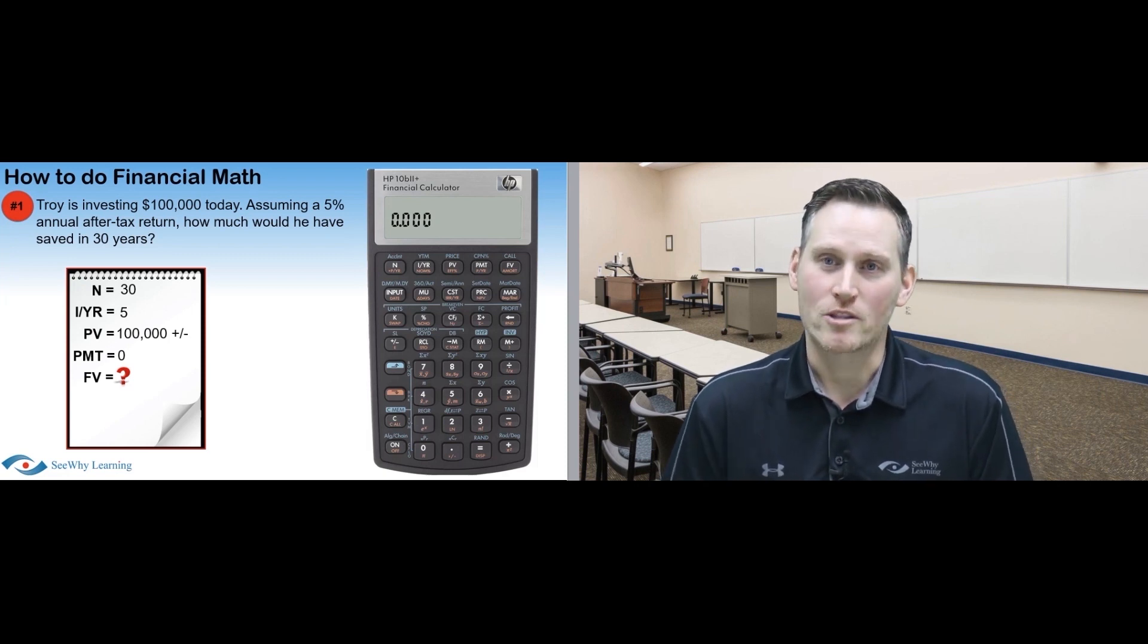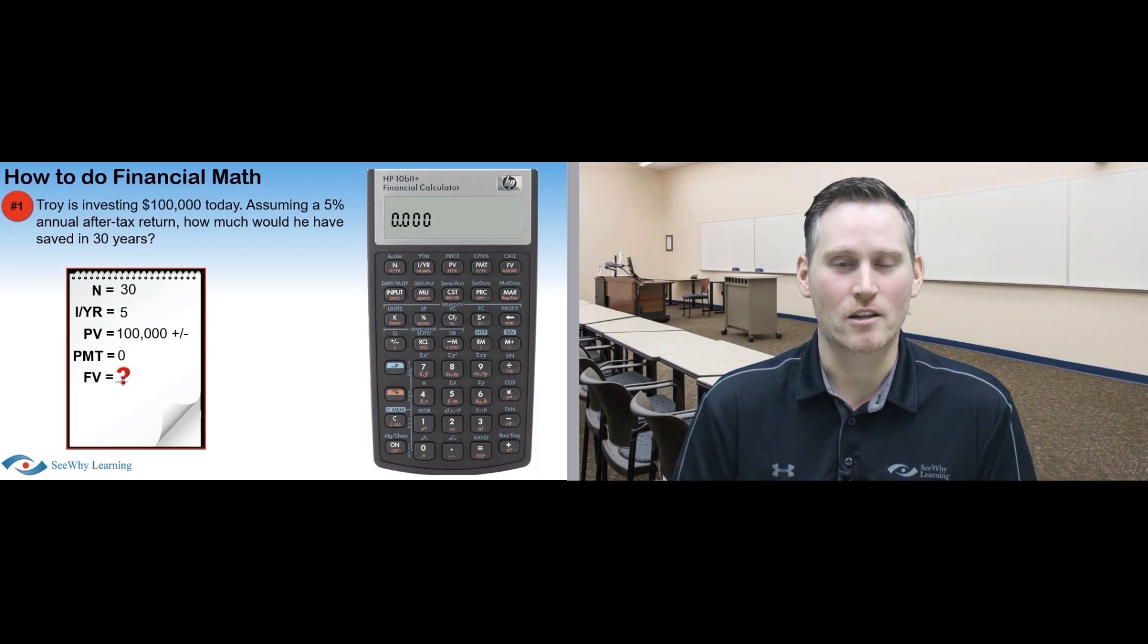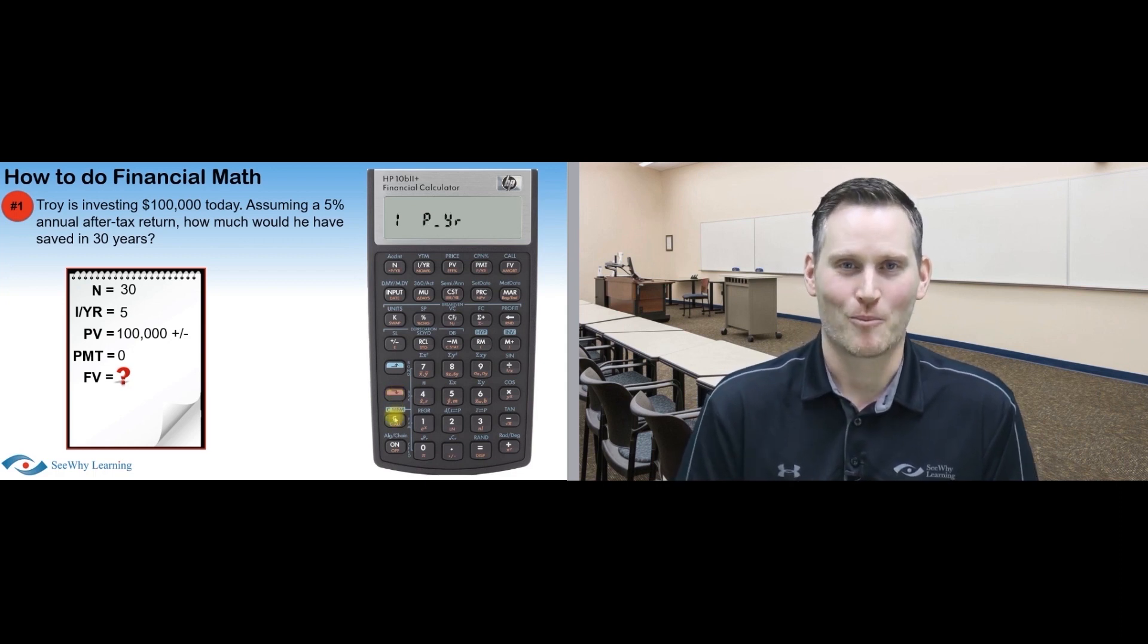Now that the variables have been carefully written out, grab your calculator. We start by confirming that the settings are correct and clear the calculator as we discussed before. Press the downshift button, press the see all key, and your calculator should say one payment per year. Perfect.